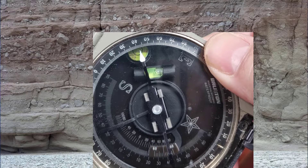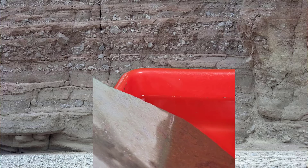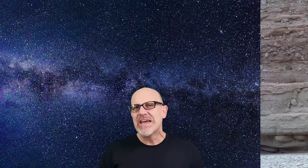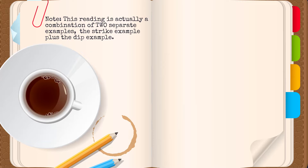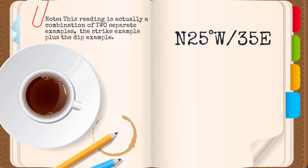Easy as that. The other thing we want to know is the direction of dip. In this example, this particular bedding plane is dipping towards the east. So now that we know how to take strike and dip, let's figure out how to write it. In the example we just observed, our strike was 25 degrees west of north and our dip was 35 degrees to the east. This is written N25W/35E, or 25 degrees west of north and 35 degrees east.